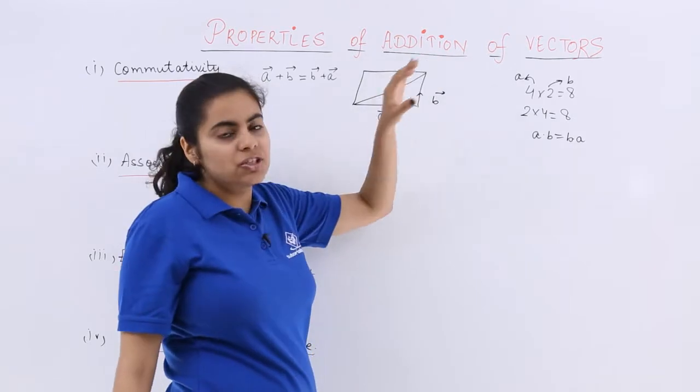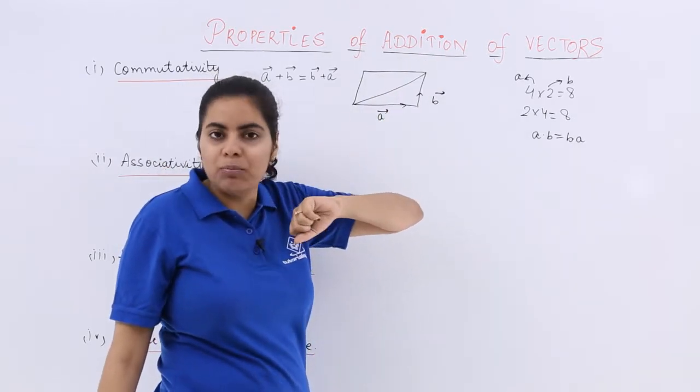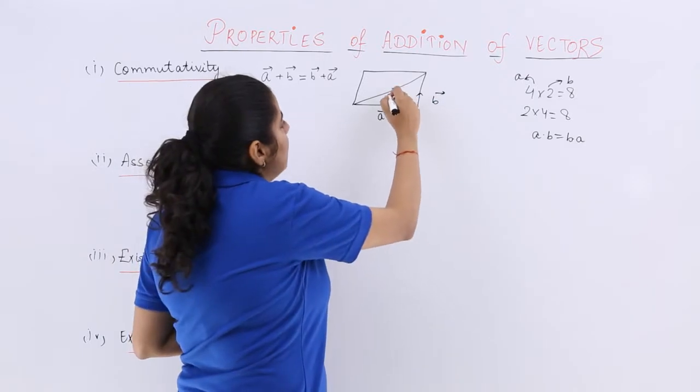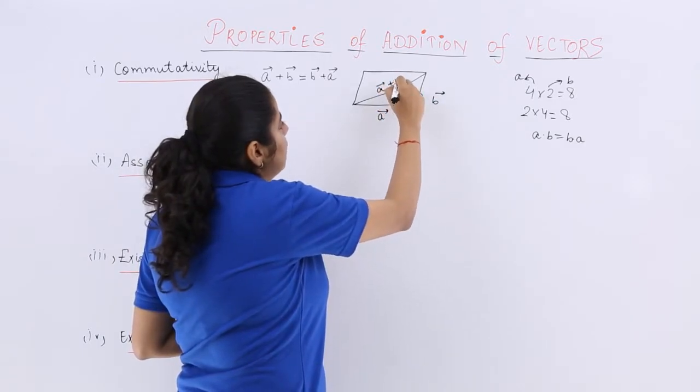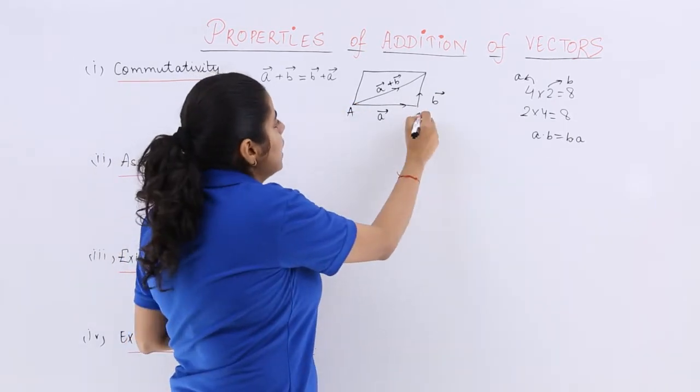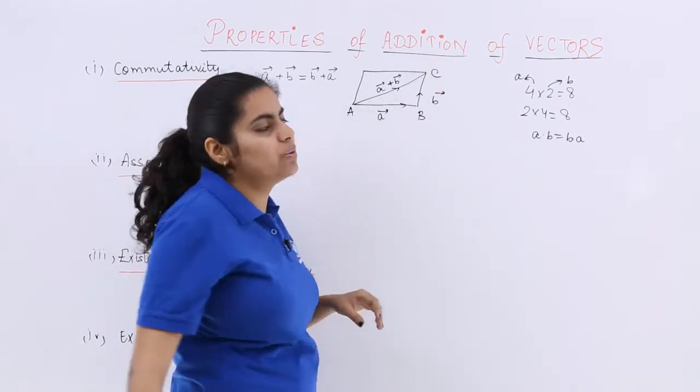Now the resultant will be the diagonal in the case of the parallelogram law of vector addition. It will not follow a cyclic order. So it will be like this, it will be A vector plus B vector. So that is the resultant when you take into consideration AB vector and BC vector.